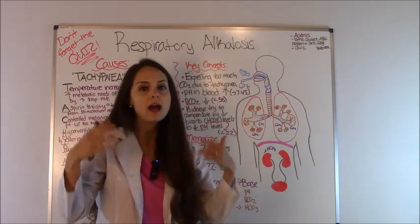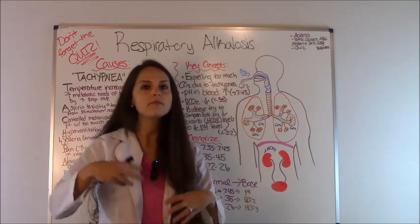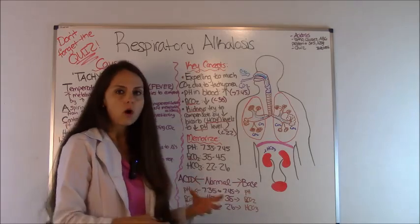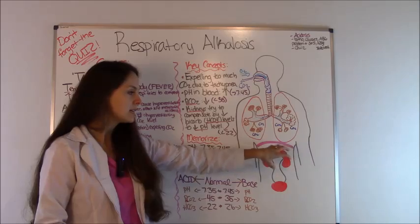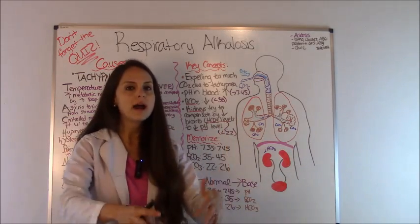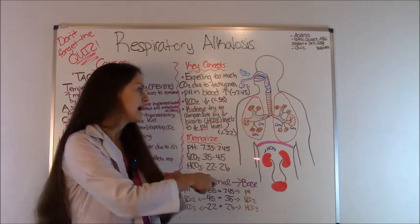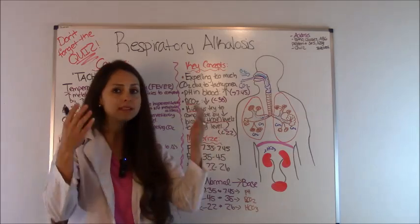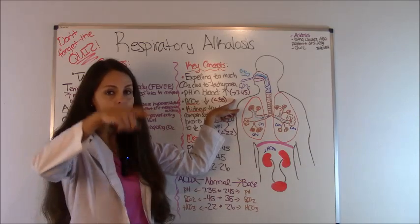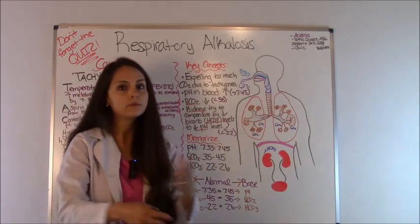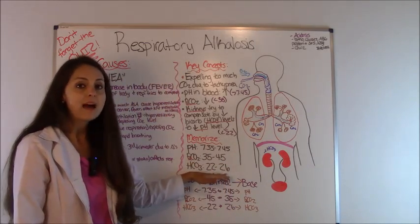The body loves to be in a homeostatic environment, so it will try to use other organs to help fix the problem. The kidneys start to play a role and will try to compensate by getting rid of bicarbonate, flushing it out of the body through urination. The bicarbonate, or HCO3, is excreted in hopes of decreasing the pH, which is currently alkalotic and too high, so by getting rid of bicarbonate the body hopes to bring that pH back down.